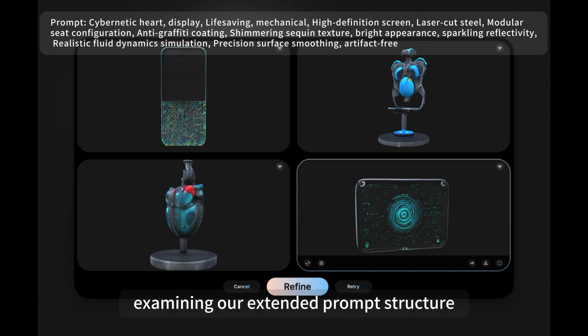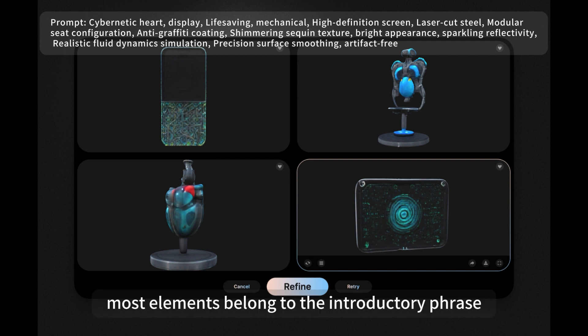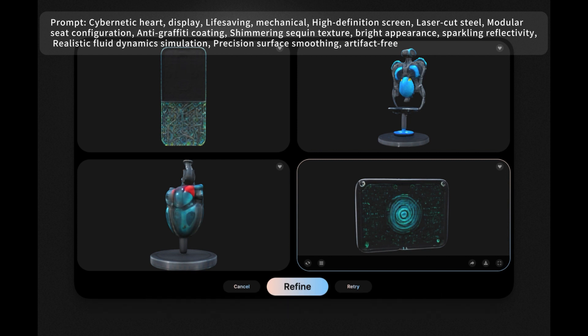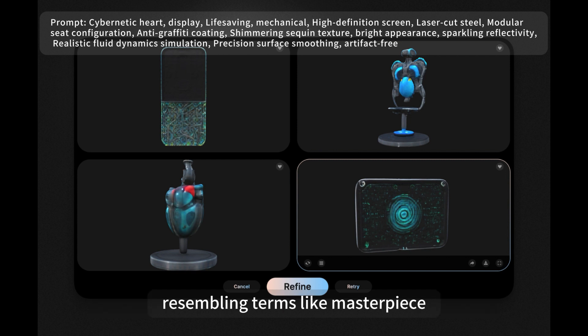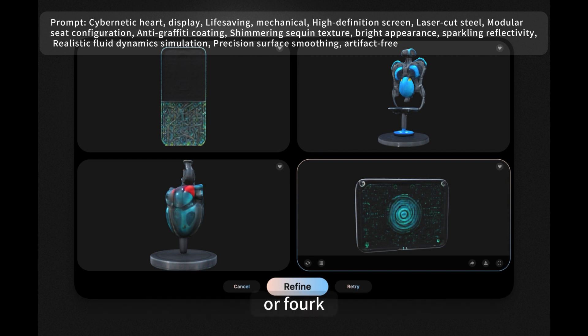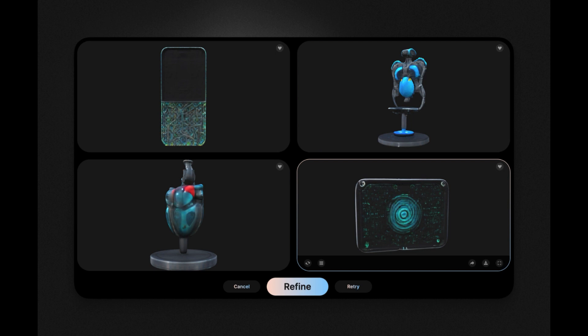Examining our extended prompt structure, we notice that apart from the subject, most elements belong to the introductory phrase, resembling terms like masterpiece or 4K. Moving on to 3D, we need to remember new prompt words for better results.